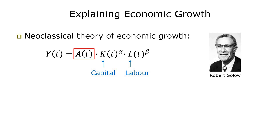An additional factor, A, is needed to make the equation work and account for the unexplained part of growth. It's worth emphasizing that A is not a measured quantity — it's the residual that is not explained by K or L, and this residual is called the total factor productivity. It's often considered to be a proxy for technological progress, and it can account for up to 60% of economic growth in the equation. That's quite a lot to leave to a residual factor, and nothing related to the environment appears anywhere in this equation — no materials, land, or energy, which is typical of neoclassical economics.